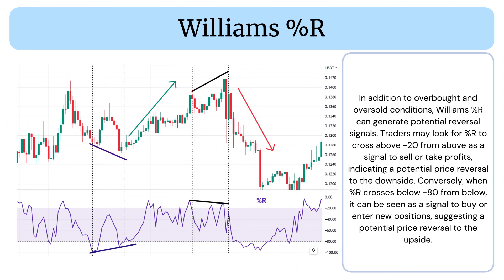In addition to overbought and oversold conditions, Williams Percent R can generate potential reversal signals. Traders may look for Percent R to cross above 20 from above as a signal to sell or take profits, indicating a potential price reversal to the downside. Conversely, when Percent R crosses below 80 from below, it can be seen as a signal to buy or enter new positions, suggesting a potential price reversal to the upside.